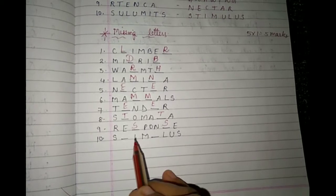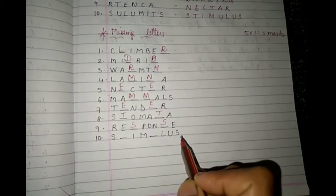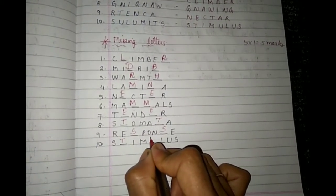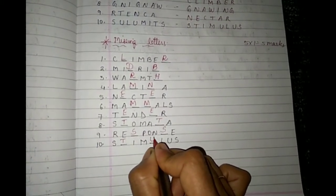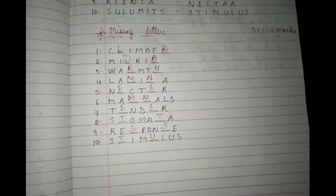For the tenth one, look here: S-dash-I-M-dash-L-U-S. Here the two blanks have different letters: S-T-I-M-U-L-U-S — stimulus. So we have response and then stimulus.